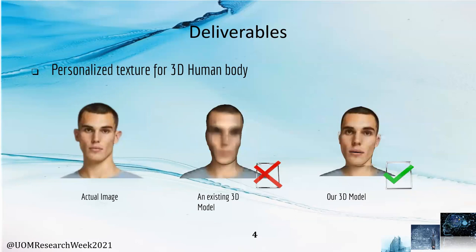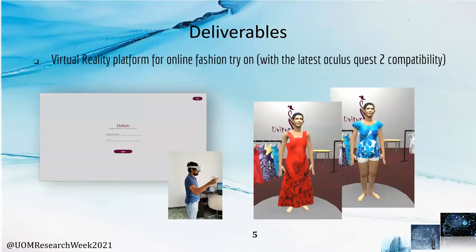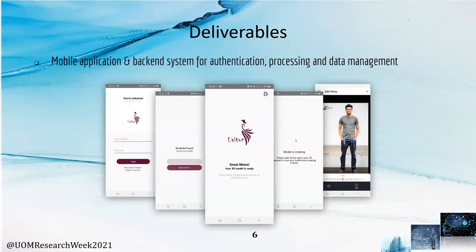Then we generate the texture to the body model. We have focused on creating a body model with high quality texture especially for the head. After creating them, we create a platform for the user to virtually fit on different clothes using Unity. This is created as an app in Oculus Quest 2, which is the latest VR headset by Facebook. We also create a mobile app to help the user with uploading the needed image with authentication. The users are able to upload an image from the mobile phone, then it will trigger the backend API and start processing.